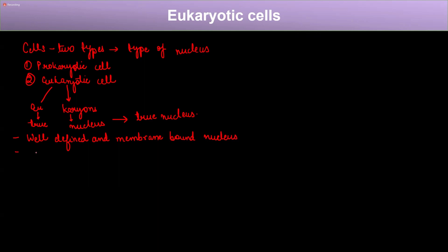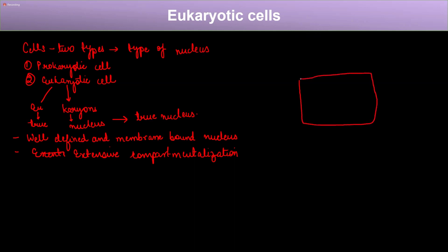A eukaryotic cell is also said to have extensive compartmentalization. If you remember, a cell has an outer boundary called the plasma membrane or cell membrane. Based on the type of cell, there can also be other outer boundaries such as cell walls or cell envelopes, as we saw in prokaryotic cells. But the plasma membrane is present in all kinds of cells.